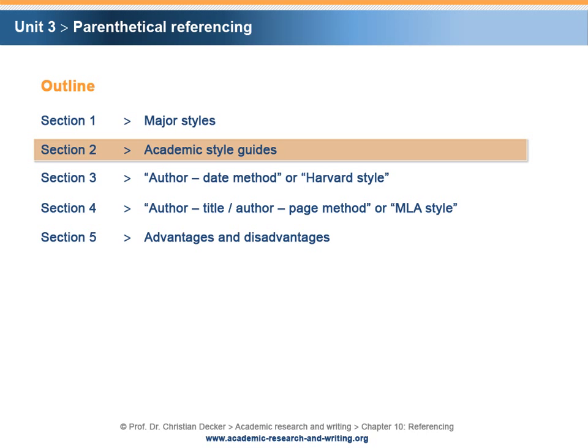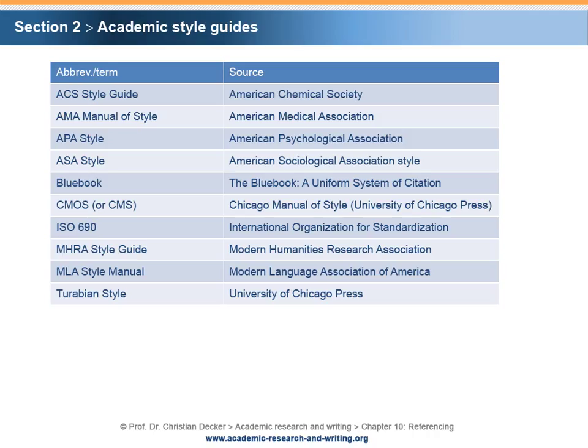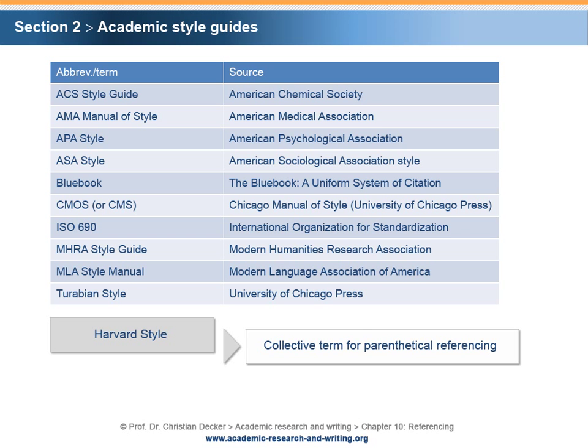Section 2 – Academic Style Guides. There are various academic style guides. It is important to note that the term Harvard style is used as a collective term for parenthetical referencing, or as a synonym for the Author-Date method.